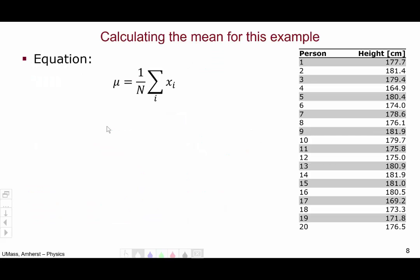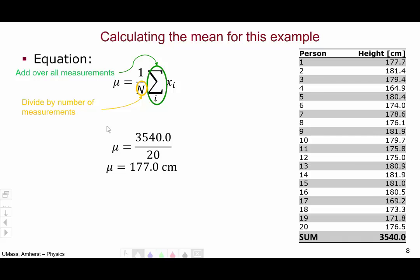Let's calculate the mean for these data. When we add up all of the measurements, we get a sum of 3540 centimeters. When we divide by the number of measurements, we take 3540, divide by 20, which gives us a result of 177 centimeters. This is our average, or our mean.